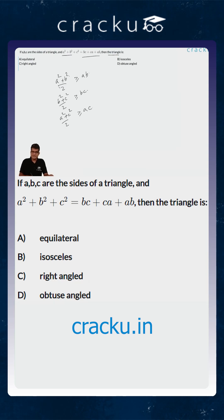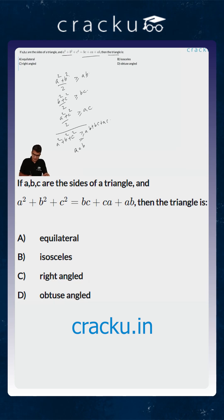This is the arithmetic mean is greater than or equal to geometric mean. If you add all of this up, the left hand side becomes a² + b² + c² ≥ ab + bc + ac, and the equality will occur if and only if a = b = c.